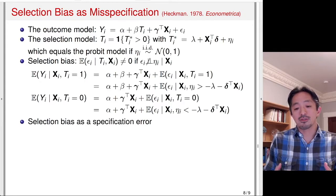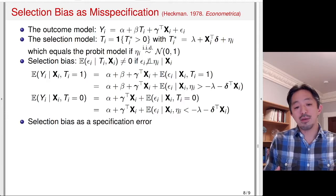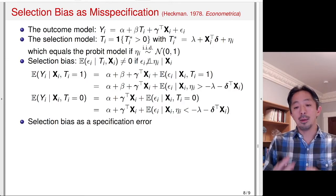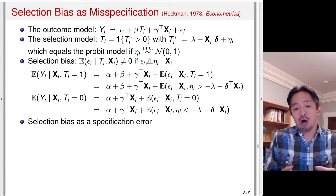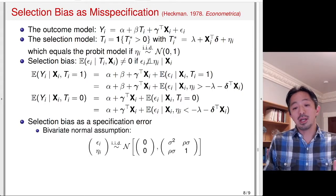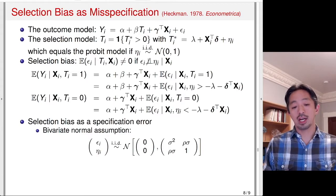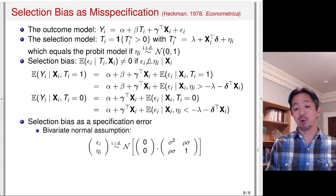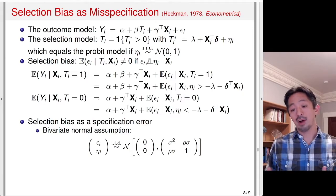This strange conditional expectation of ε_i given X and some information about η_i is actually a function of X. This is why selection bias is called a specification error: if you naively regress Y on T and X, you are forgetting this term — the expected value of ε_i given X — which is the omitted term you should have included. What Heckman did was to derive this term as a function of X, under the assumption that the error terms are bivariate normal.